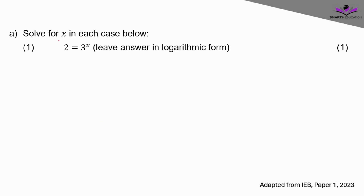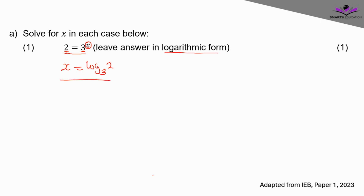Question 1a1: solve for x. We're given that 2 is equal to 3 to the power x, and we're supposed to leave our answer in logarithmic form. We're changing from exponential form to logarithmic form. Remember, the exponent becomes the subject, so x is equal to log of 2 to base 3. The base is 3, the number is 2, and the exponent is the subject. This is the answer in logarithmic form.